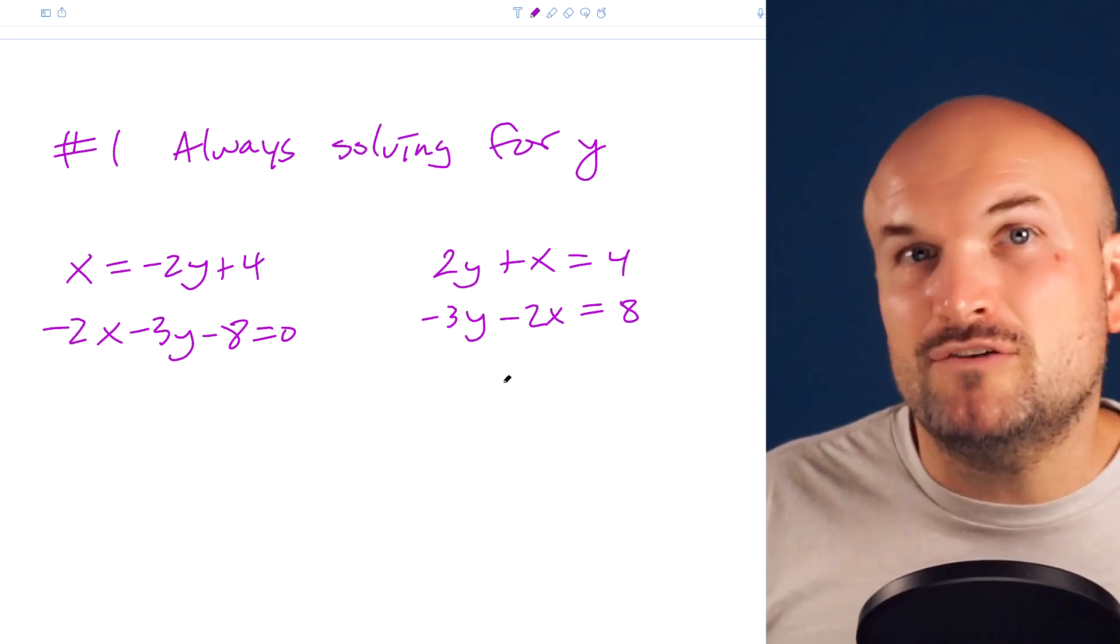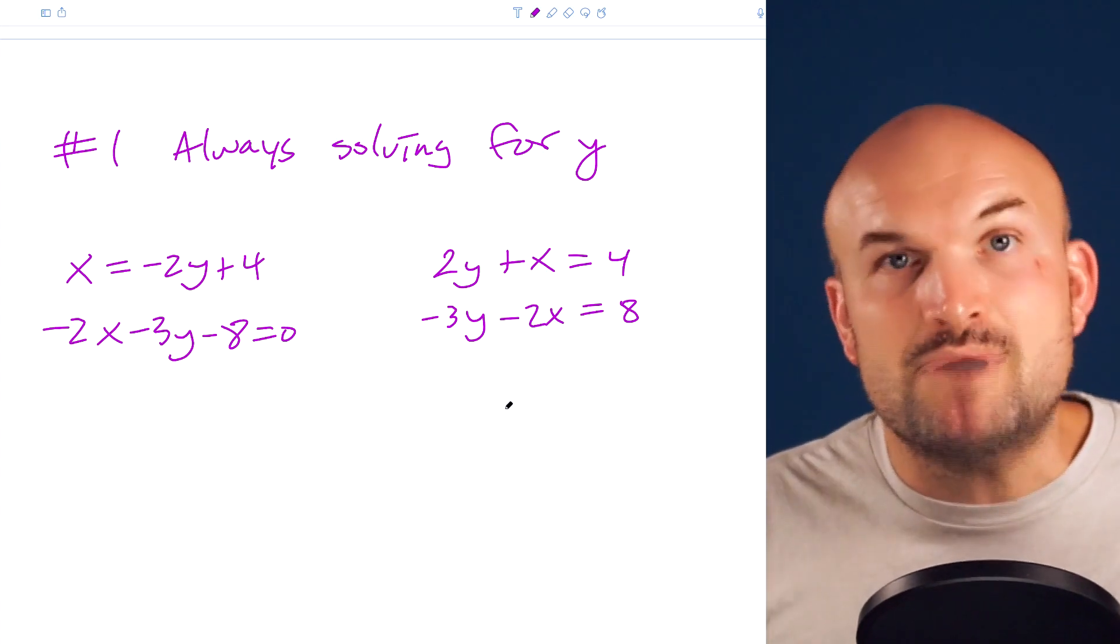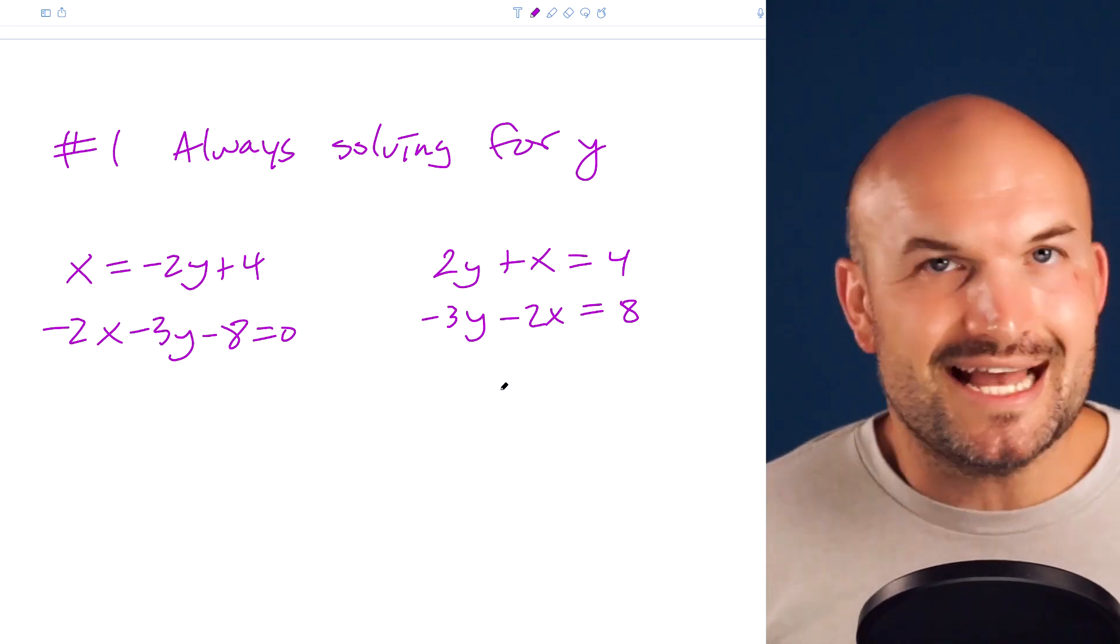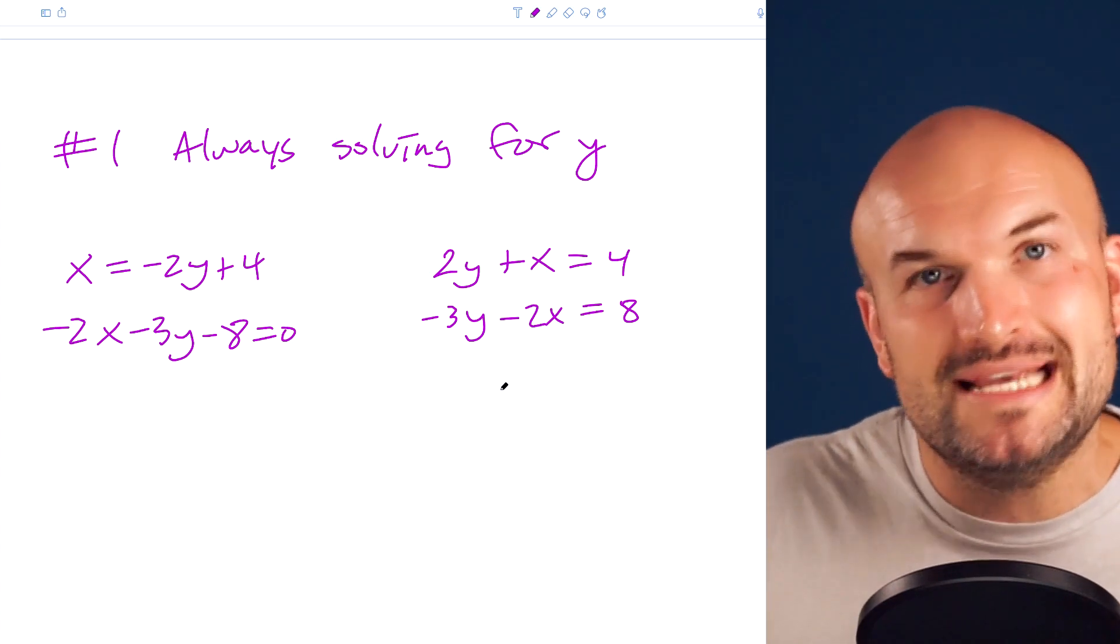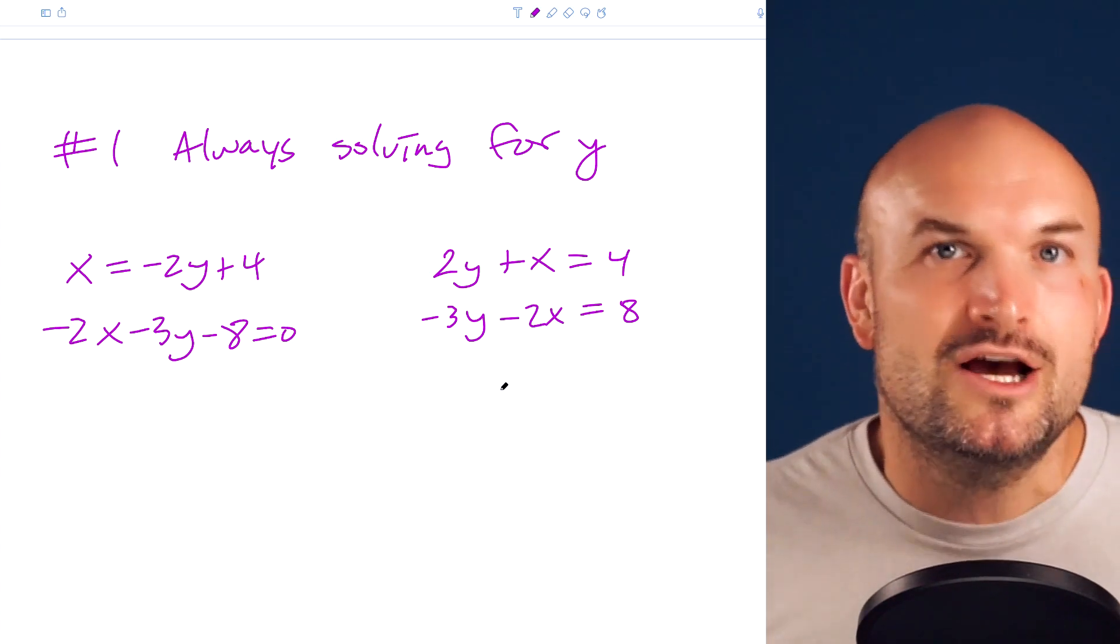In the next example, it's going to be easier to solve for x because the coefficients have a smaller common multiple than the coefficients for the y. Again, you can choose either one to eliminate the x or the y. In this case, it's going to be easier to work with eliminating the x over the y.